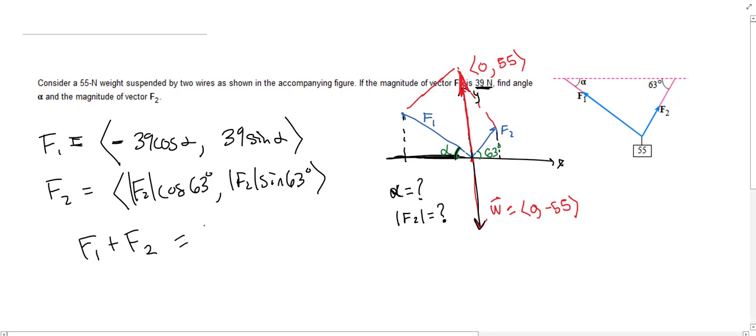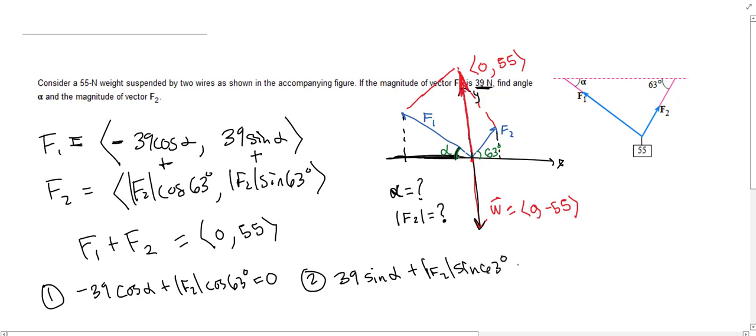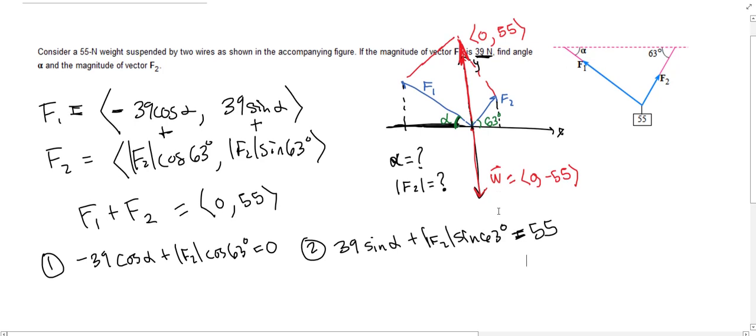Okay, and so that means that when we add F1 plus F2, the result is (0, 55). And this is actually going to lead to two equations. So F1 plus F2, if we add up the two horizontal components, the sum should be 0. So that's equation number one: -39 cosine alpha plus magnitude of F2 cosine 63 is 0. And then equation two is the vertical components: 39 sine alpha plus magnitude of F2 sine of 63 is equal to 55. And so now we have two equations with our two unknowns, and we can solve these using some algebra and trig.